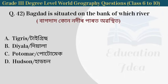Next question: Baghdad is situated on the bank of which river? The answer is the Tigris — Baghdad is situated on the bank of the Tigris River.